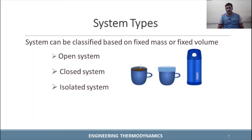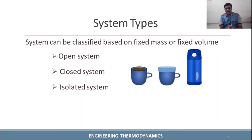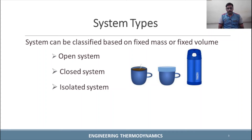Let's take the example of a coffee cup. The first image — an open cup — represents an open system. The second image, a cup with a lid where you can still sense heat, represents a closed system: you have coffee and heat transfer occurs. The third example, a thermos flask, represents an isolated system. The last two — closed system and isolated system — are fixed mass categories, while the first is a fixed volume category.